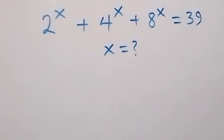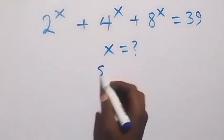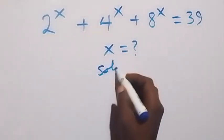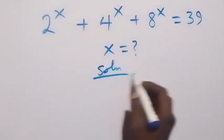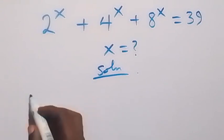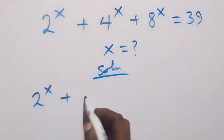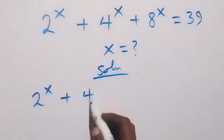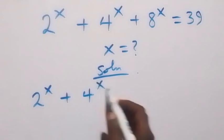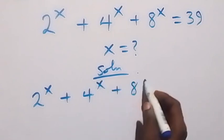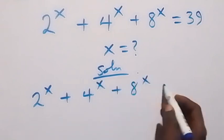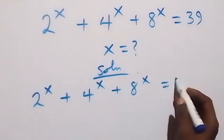Hello, you are welcome. How to solve for x in this nice exponential equation. From what is given: 2 raised to the power x plus 4 raised to the power x plus 8 raised to the power x equals 39.